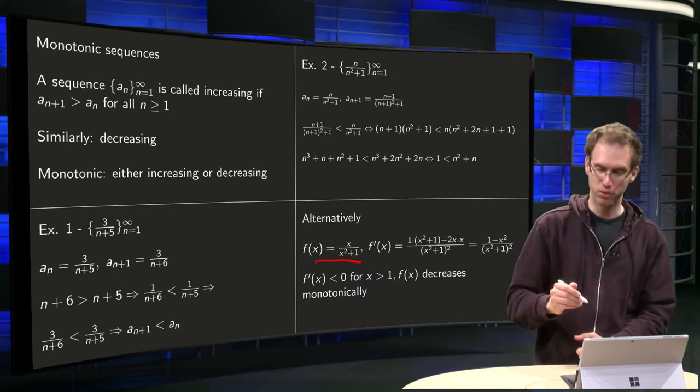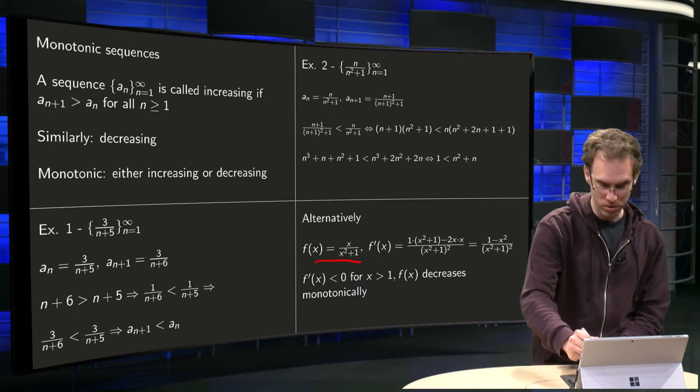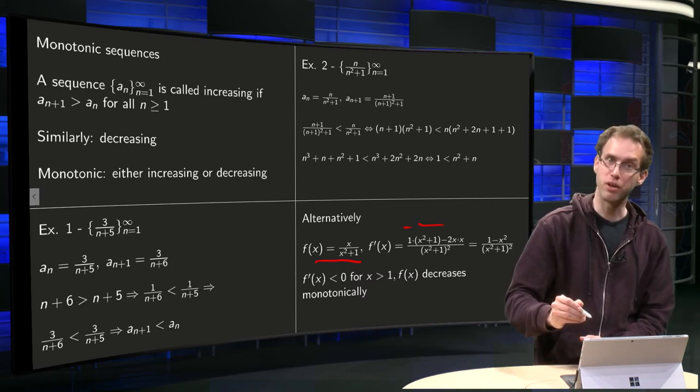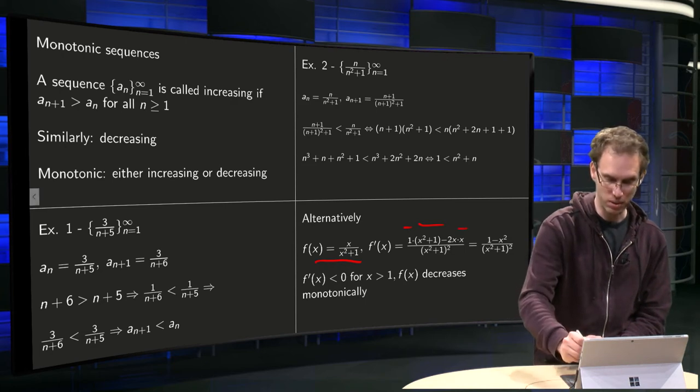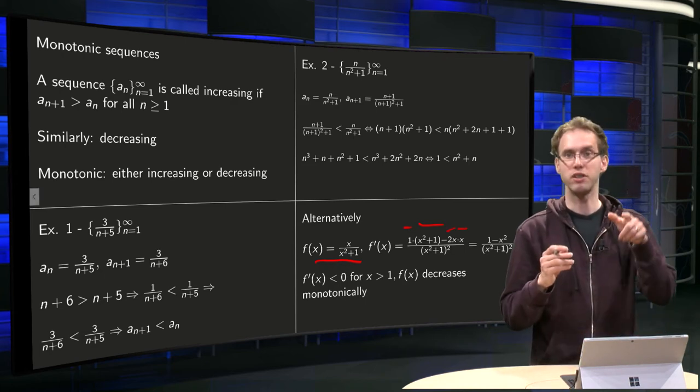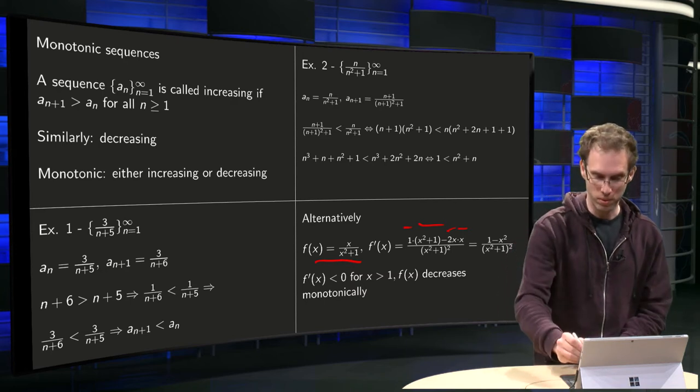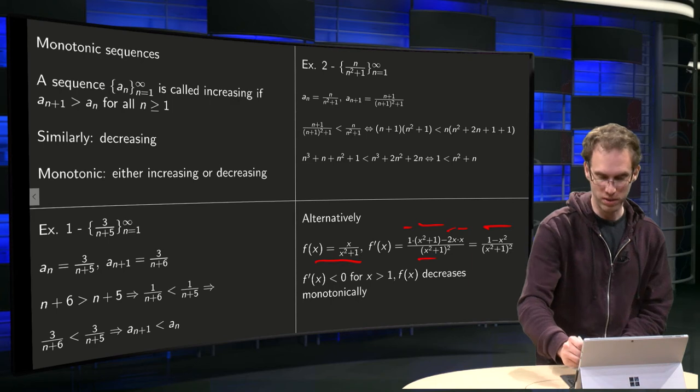Then we compute f' with the quotient rule. So 1 times (x²+1) minus derivative of denominator 2x times x of the numerator, and work it out to (1-x²), and you divide by the denominator squared.